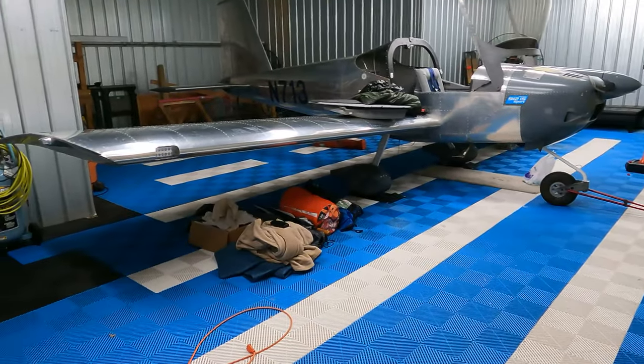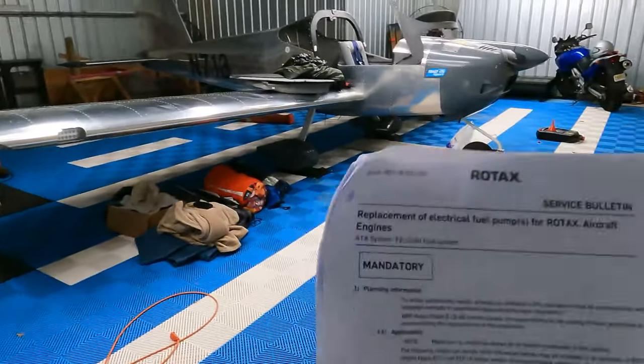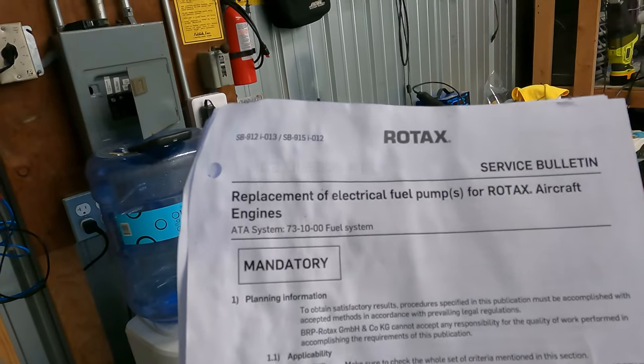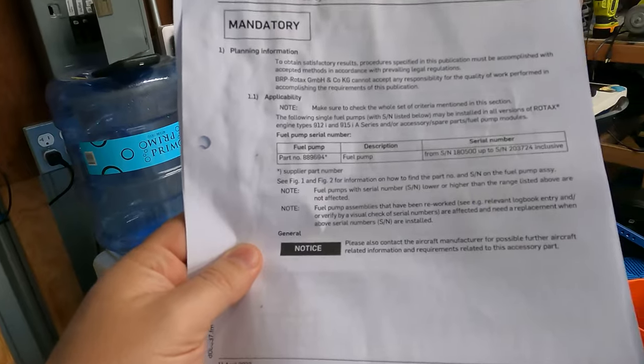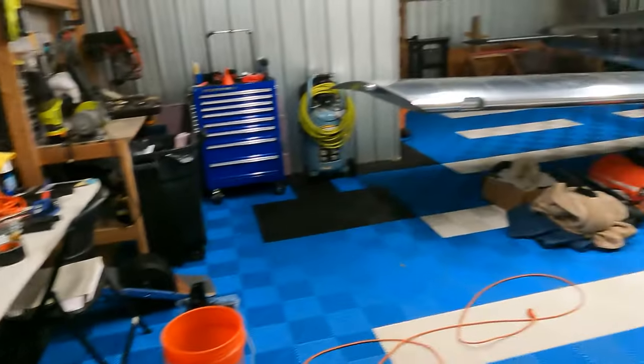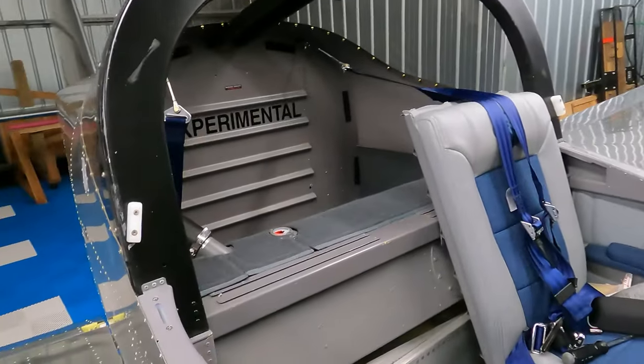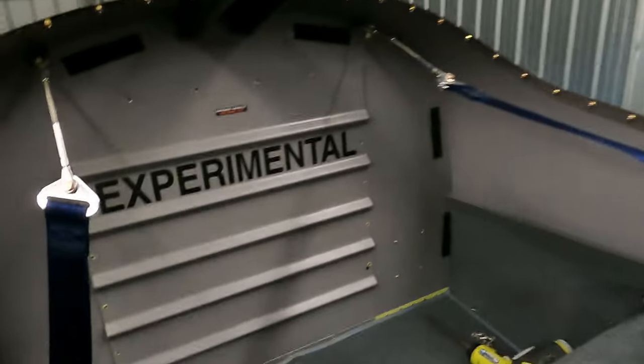Well, we're on the ground again. Why? Another fuel pump problem. A Rotax mandatory service bulletin for replacement of electrical fuel pumps. And guess who won the Reverse Rotax Lottery this time? Me. I have a serial number in the affected range. So I'm going to walk you through what's involved in getting these fuel pumps out.